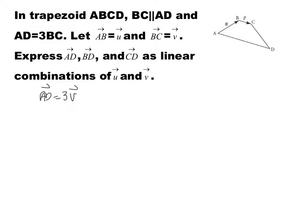For BD, we know that the vector goes from B to D. So BD is going to be BA plus AD. But BA — we know that AB is u, so BA is negative u — plus AD. We found that AD is 3v, so BD is 3v minus u.